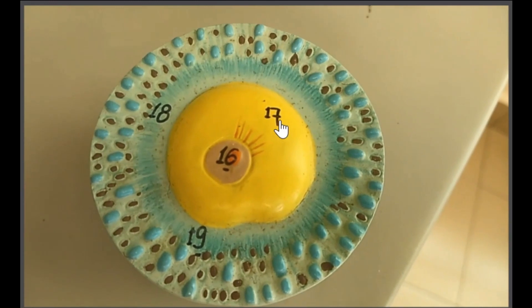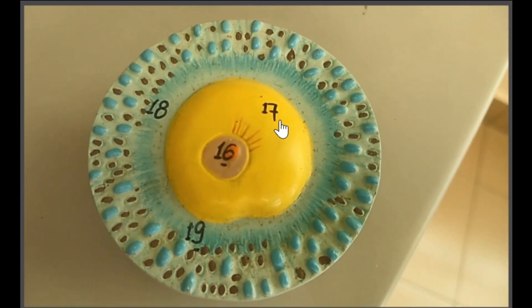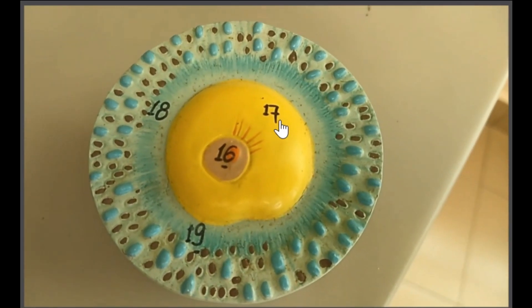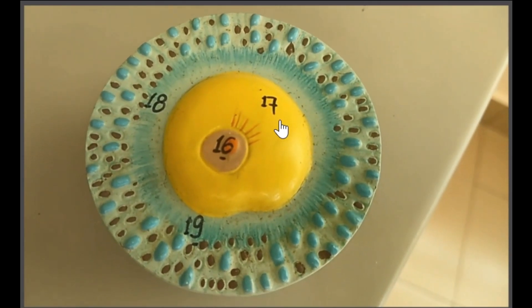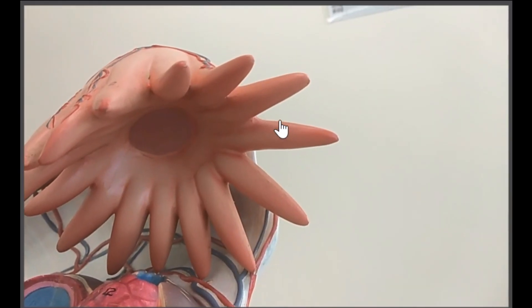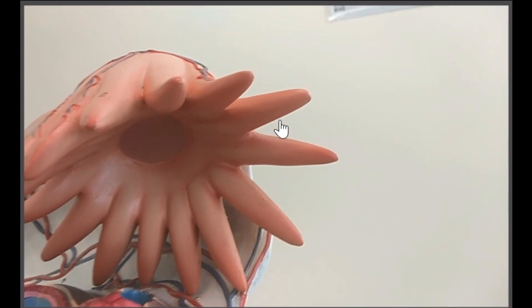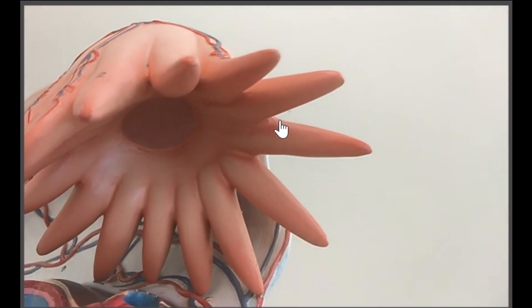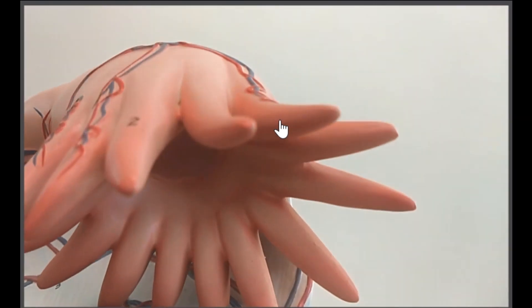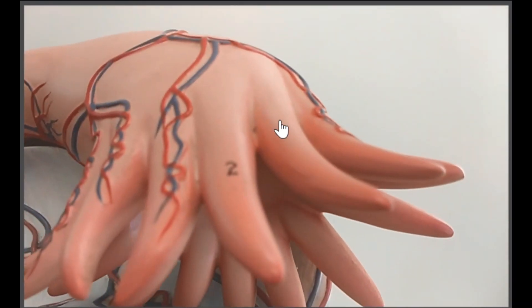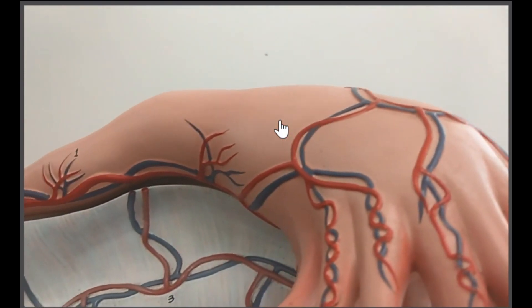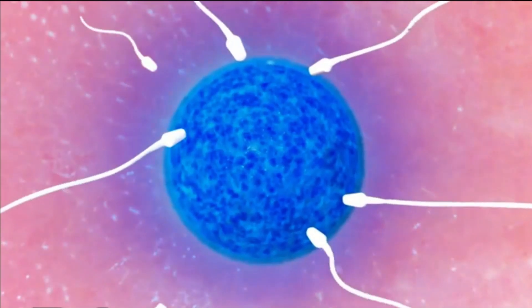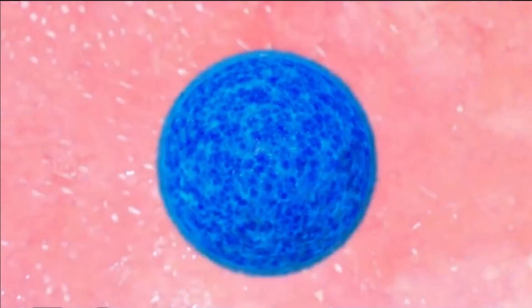The secondary oocyte that is released is surrounded by granulosa cells and is still at metaphase 2. The secondary oocyte will be swept into the fallopian tube by the current created by fimbria. Inside the oviduct or fallopian tube, the secondary oocyte has a greater chance to be fertilized.